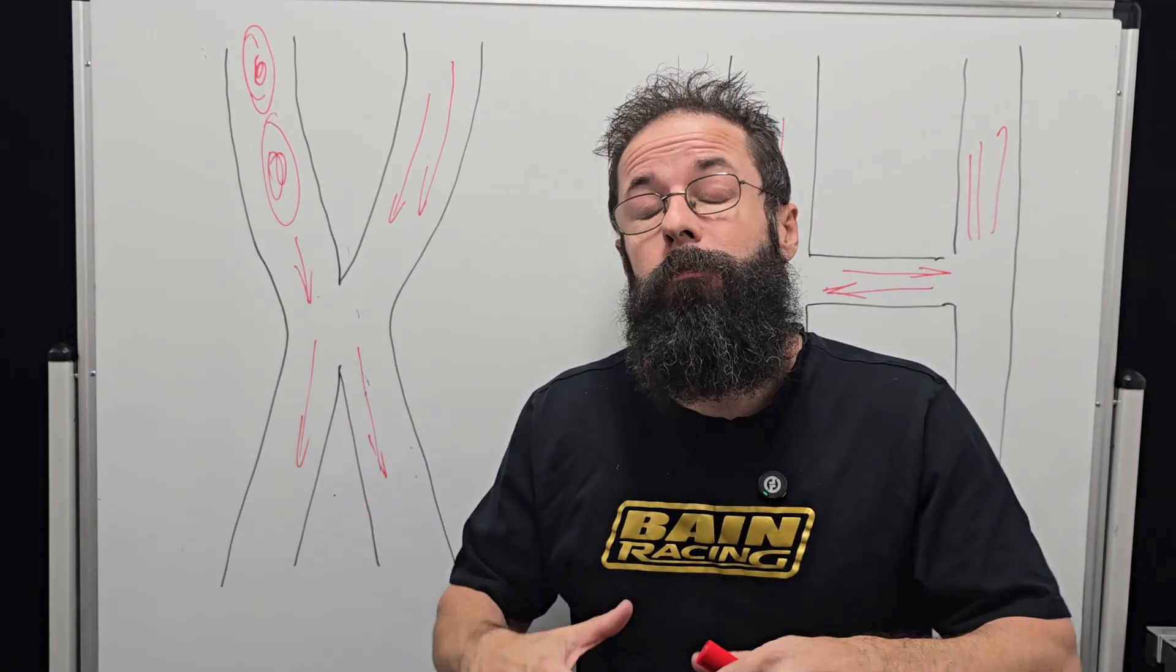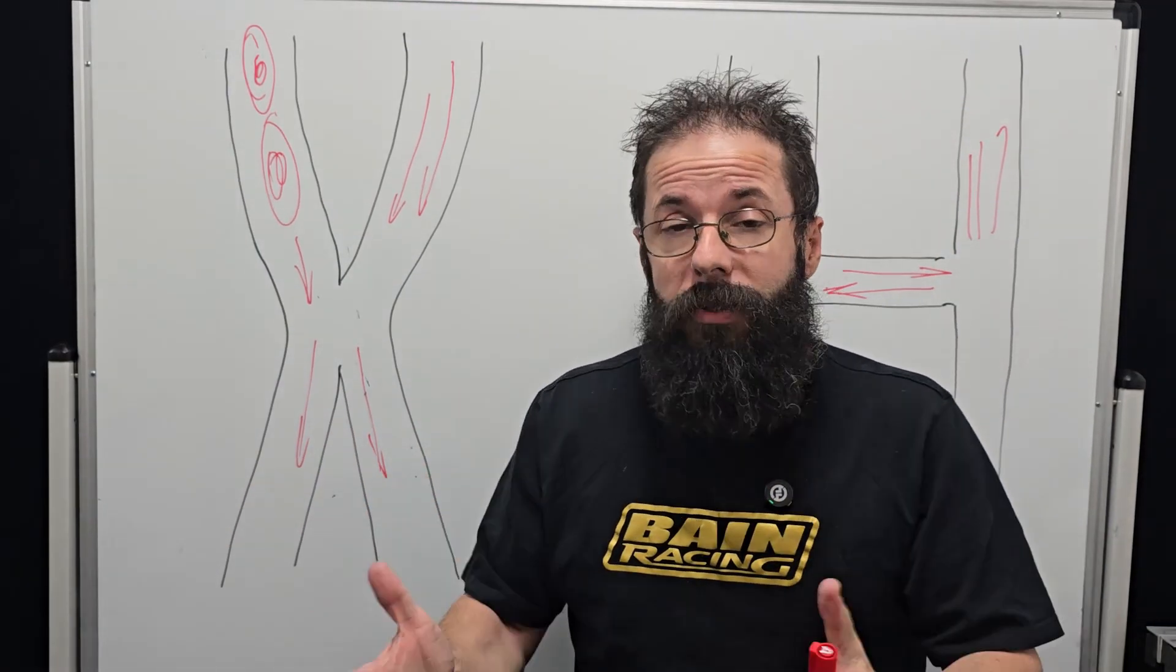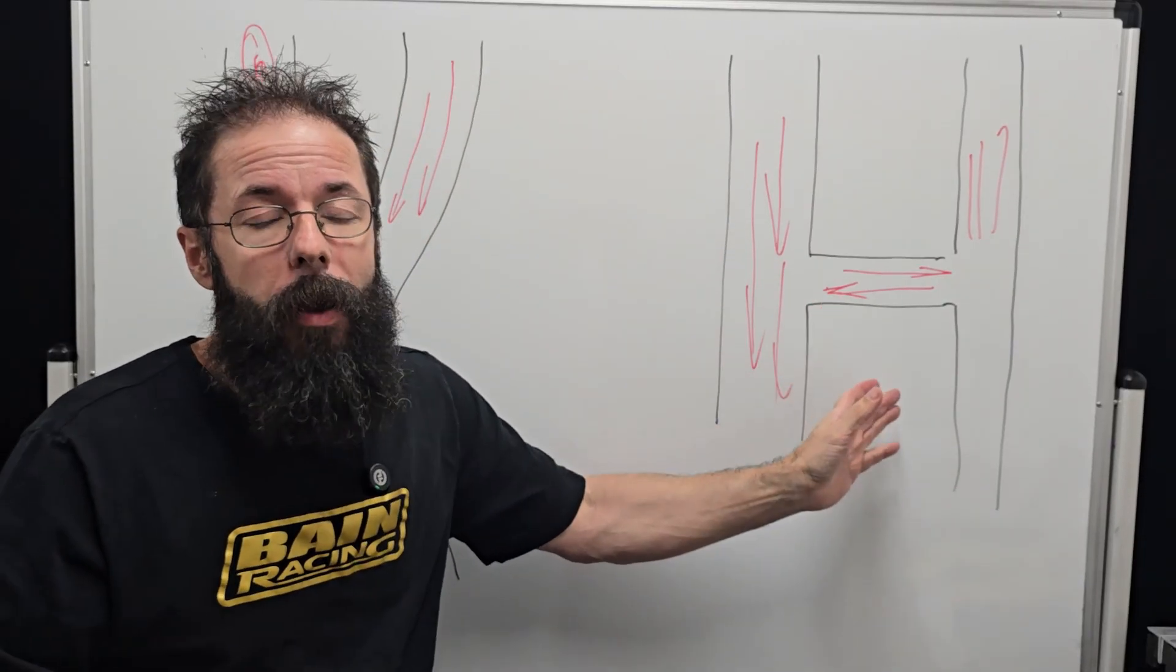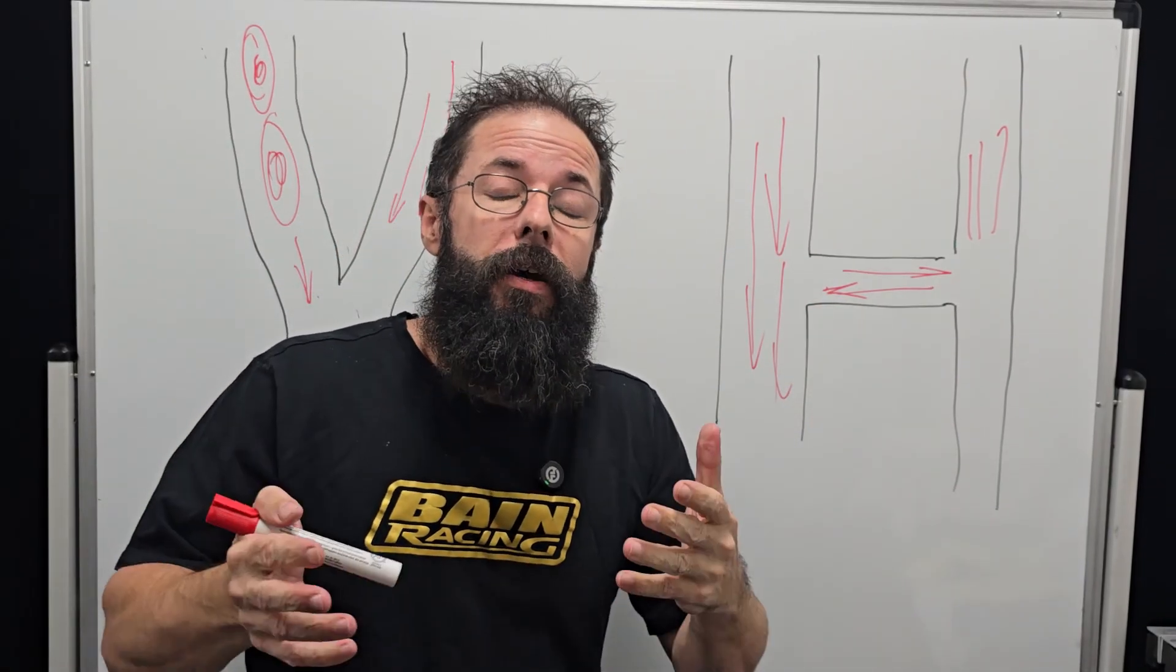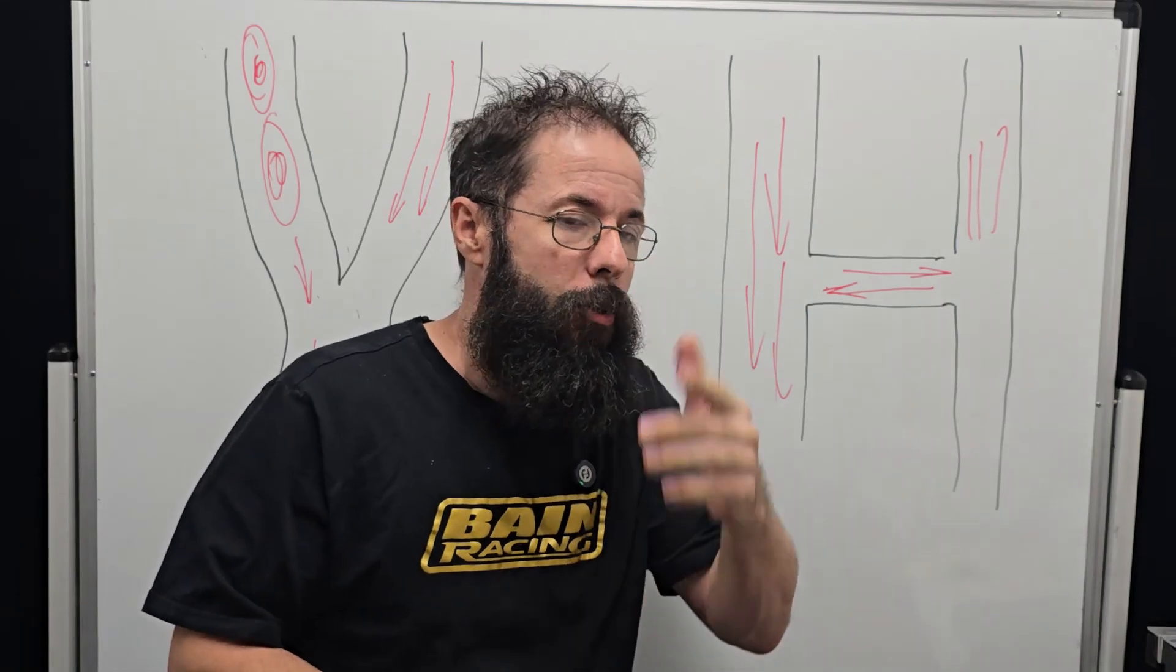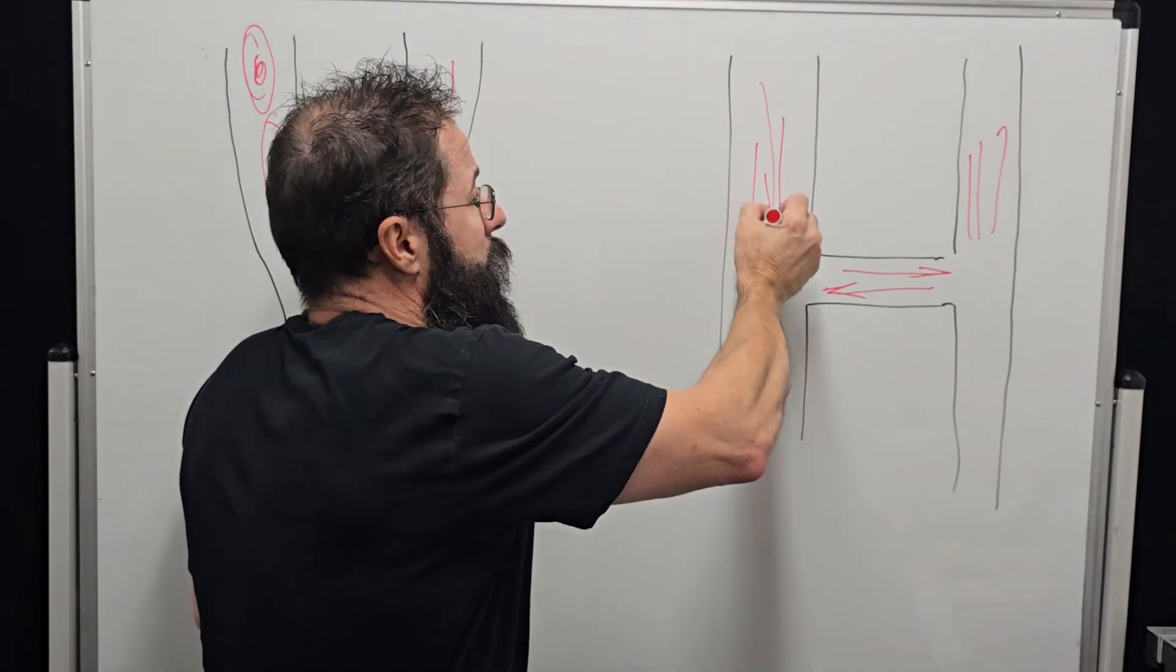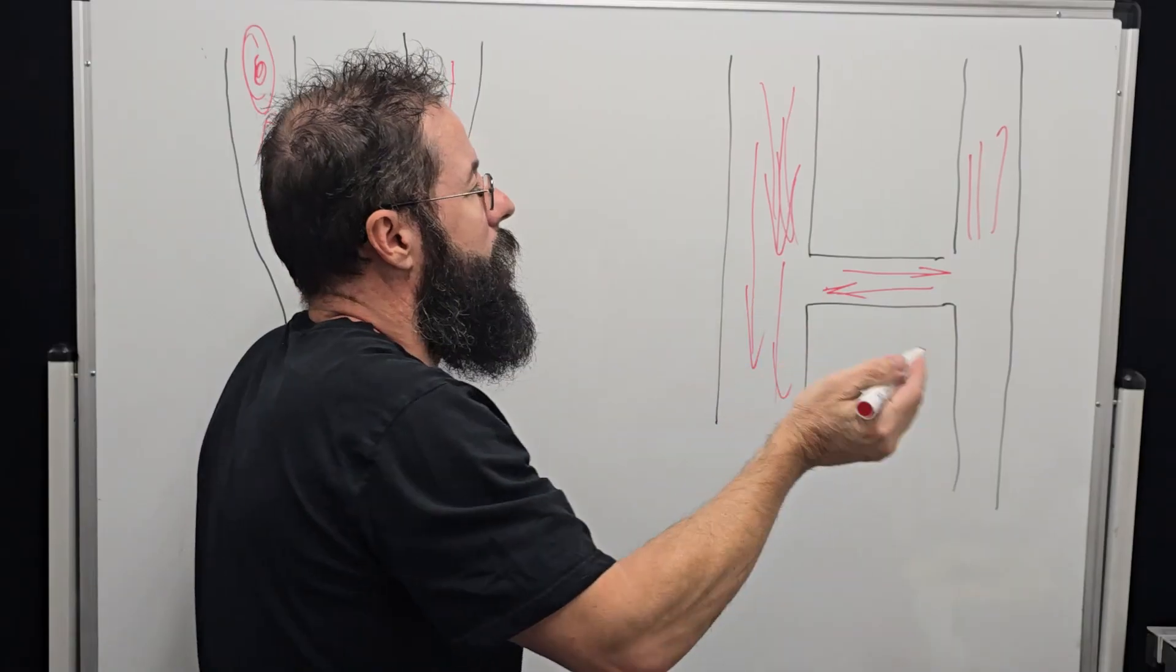The X-pipe is designed more for horsepower, not torque, whereas a low-speed H-pipe will deal with low-speed torque. The reason's pretty simple if we look at it: as we increase the velocity here, we're trying to get the two pressure pulses to exchange.